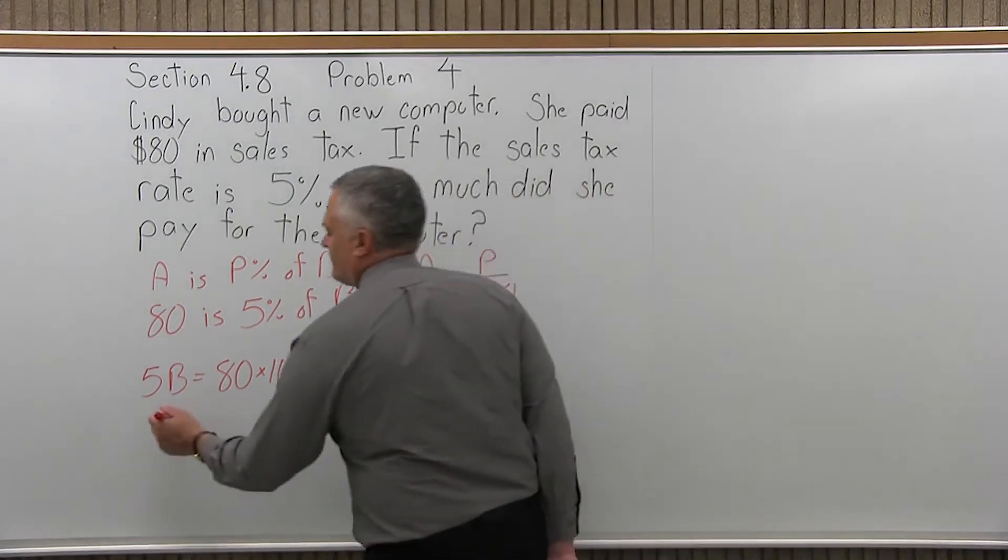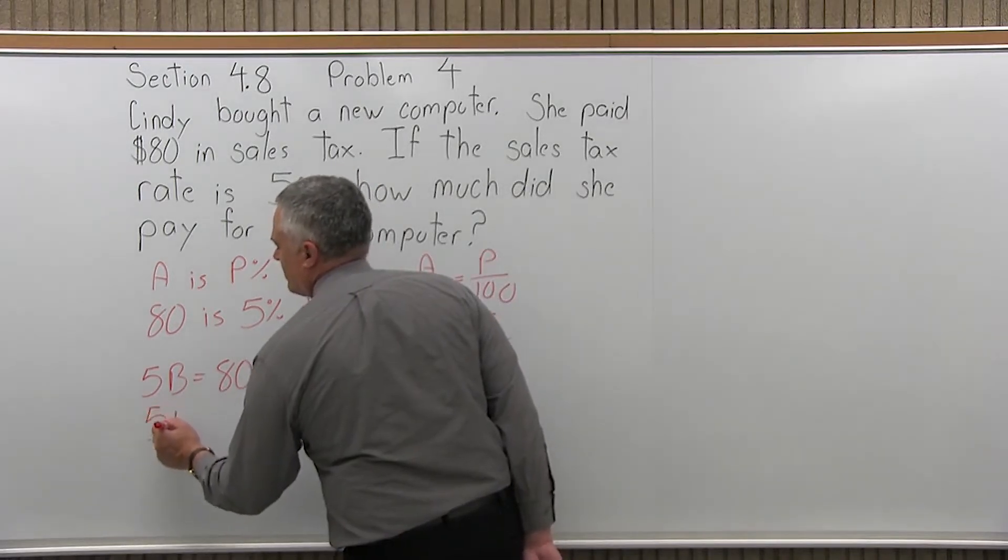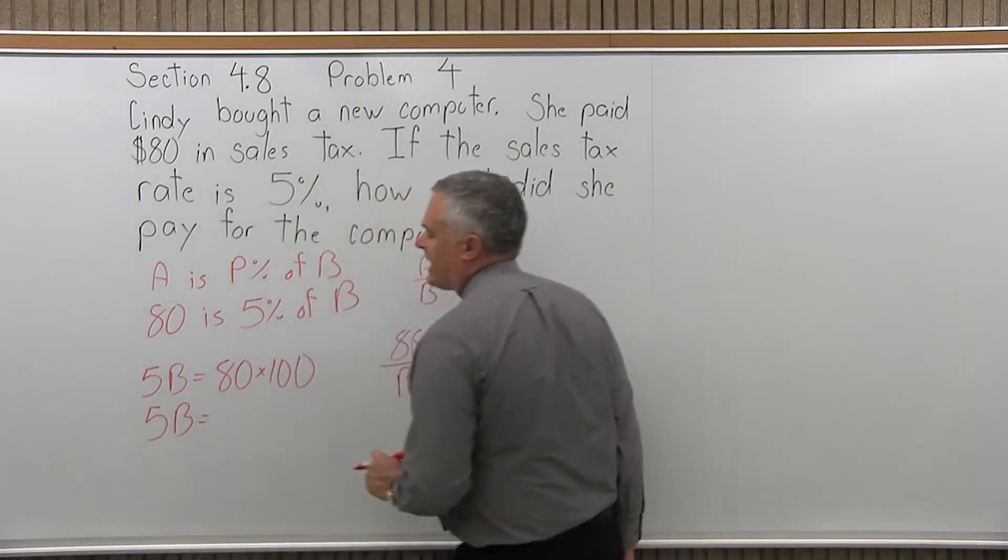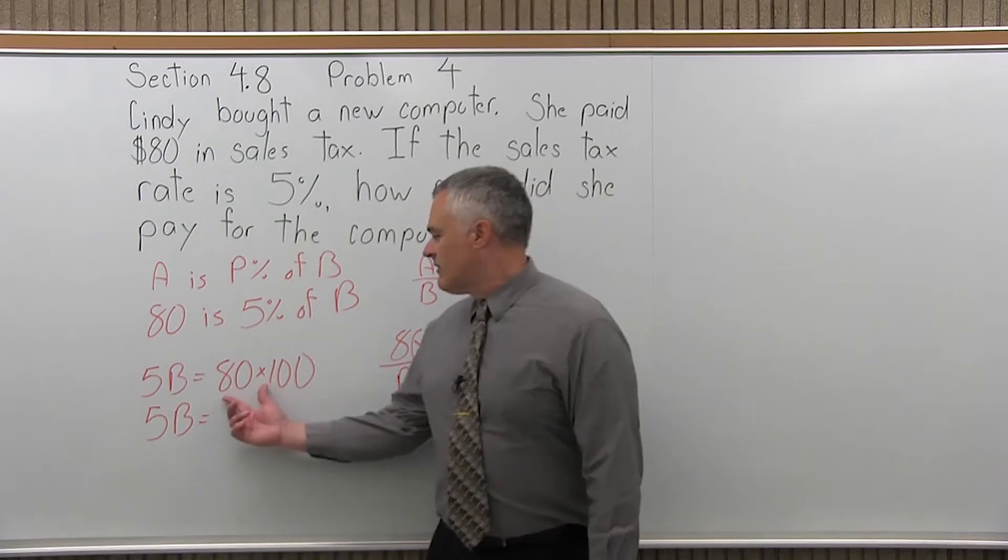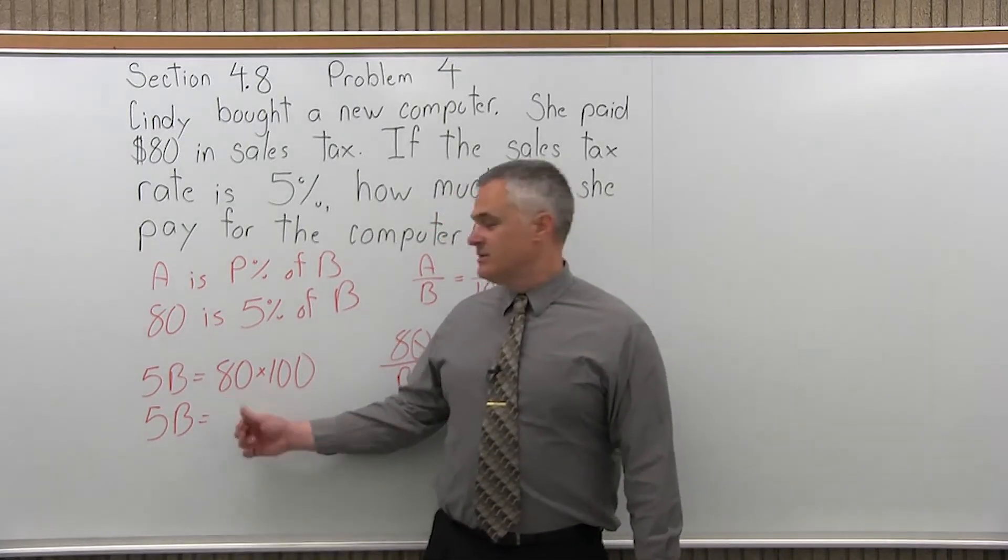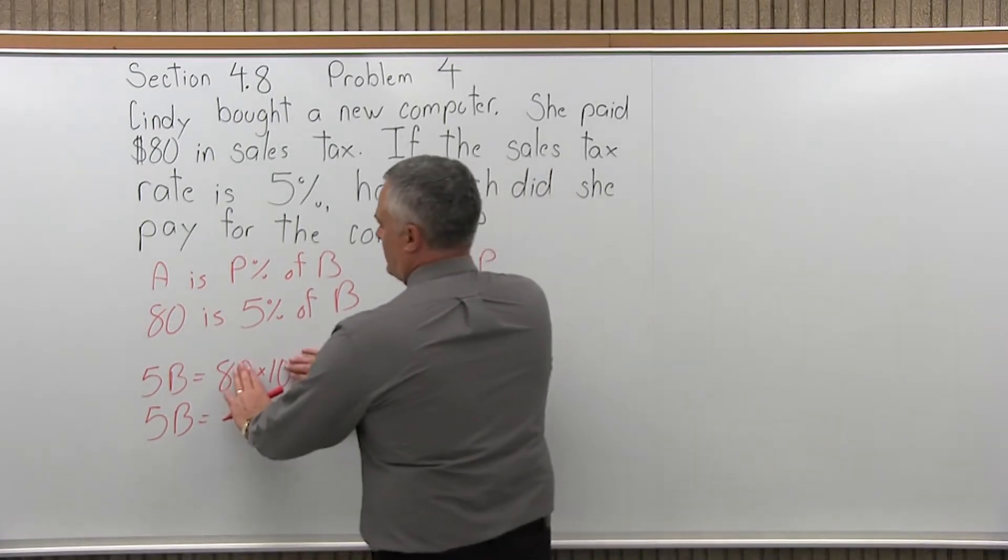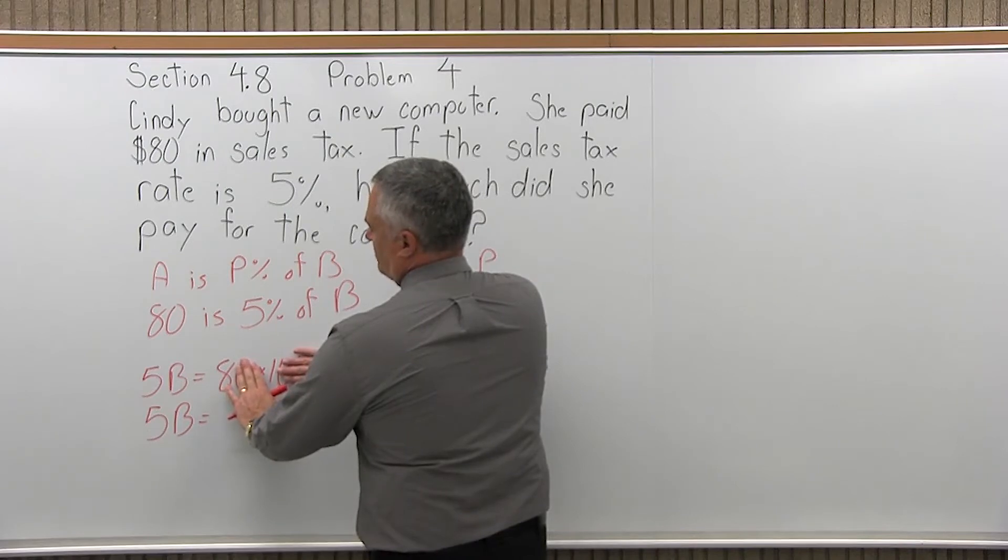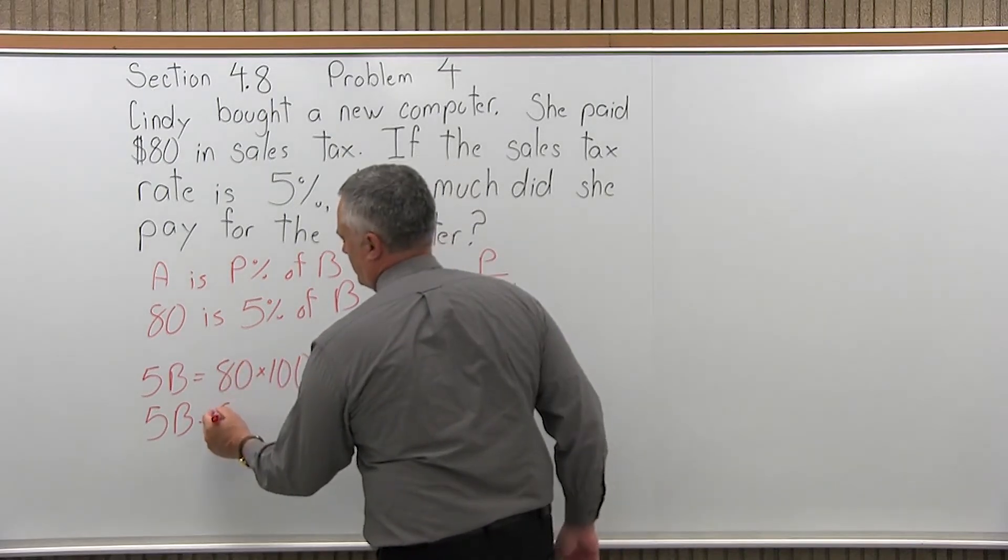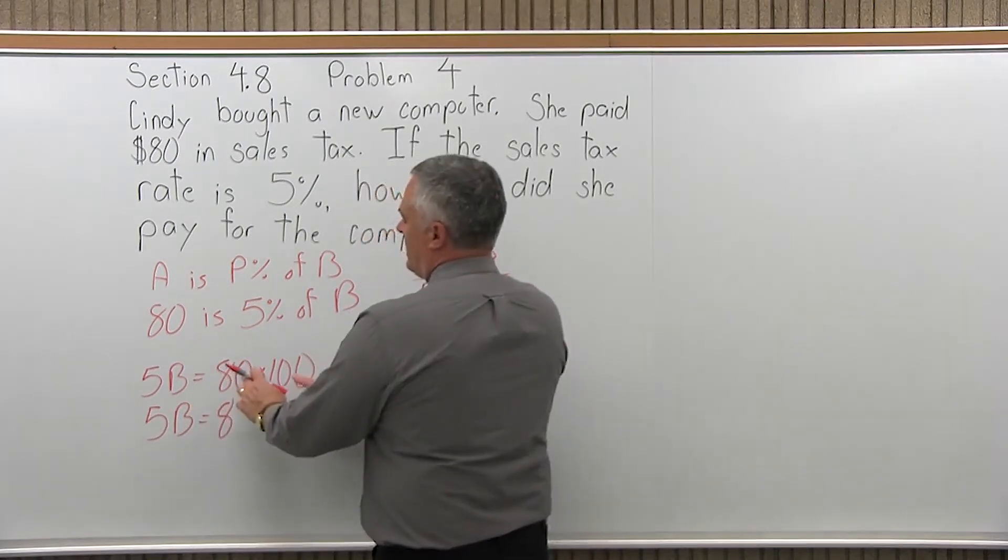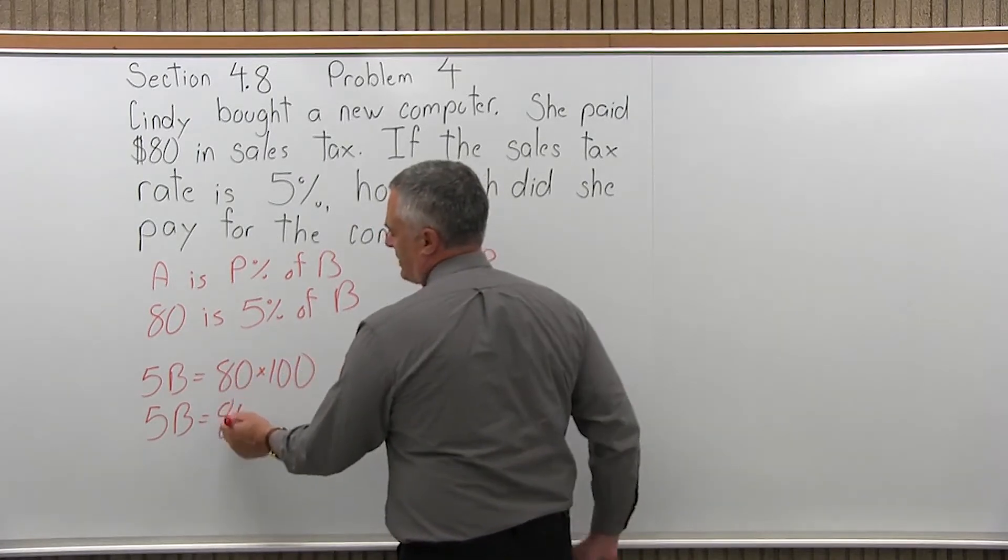So, this multiplication, 80 times 100, is actually very easy. The numbers look very big, but even without a calculator, the non-zero values are really just 8 and 1. So if I look at those, pretend you can't see the other zeros, and just multiply 8 times 1. Well, 8 times 1 is 8. That's an easy multiplication. How many zeros did I ignore? 3. So now I'll put them back.